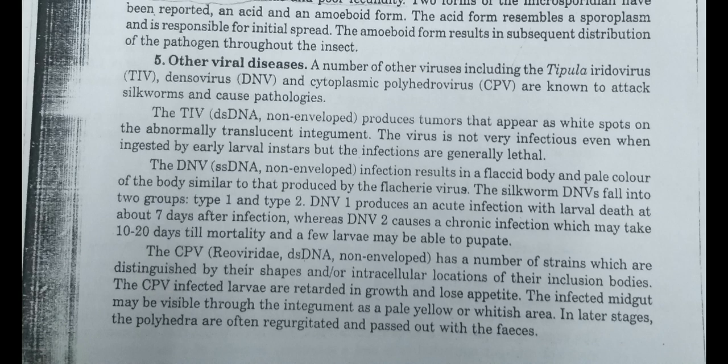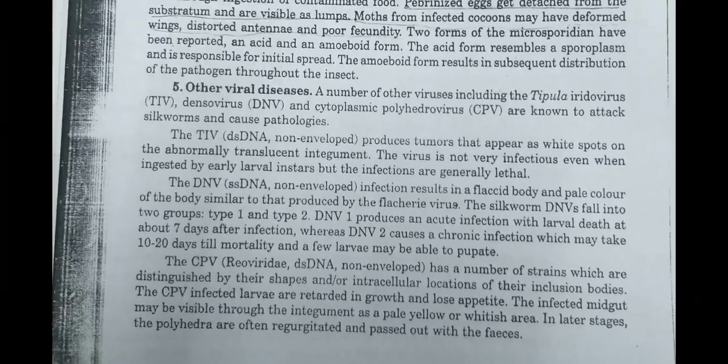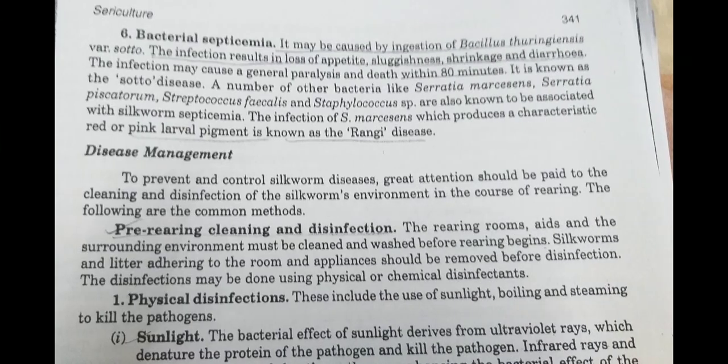CPV has a number of strains distinguished by their shapes, and they infect the larvae causing growth retardation and appetite loss. The infected gut may be visible throughout the integument as a pale yellow or whitish area, and polyhedra are often regurgitated or passed out with the feces.